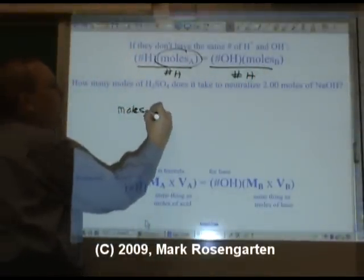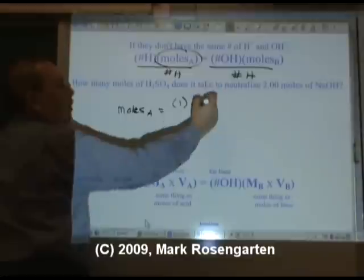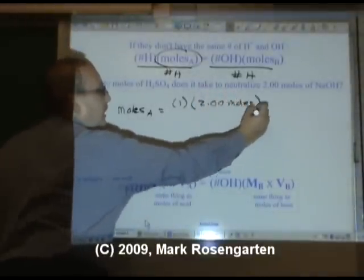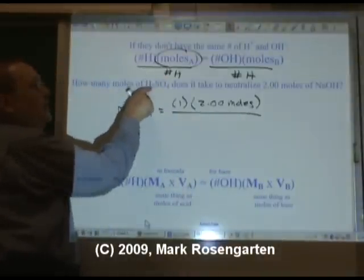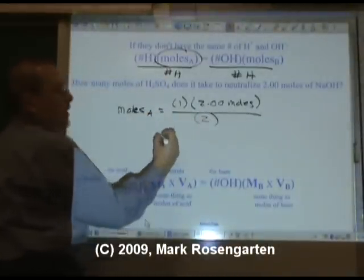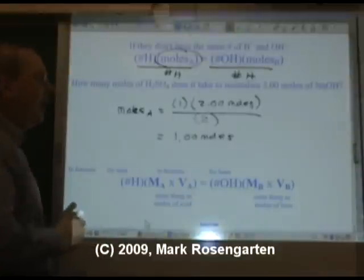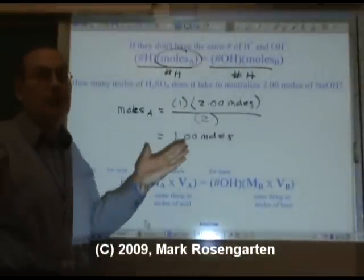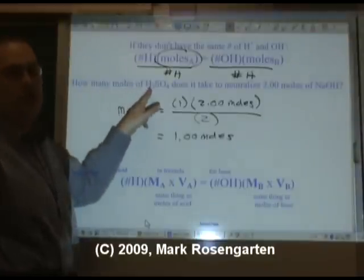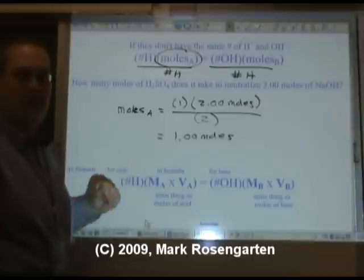So, moles of acid equals, there's one hydroxide in the formula of the base, there are 2.00 moles of base, divided by, there are two hydrogens in the formula of sulfuric acid. That means there's 1.00 moles of acid. Now, how do we know that we're solving for moles of acid and not moles of base? Well, simple. It says how many moles of H2SO4. The H in the front tells you right away it's the acid you're dealing with.